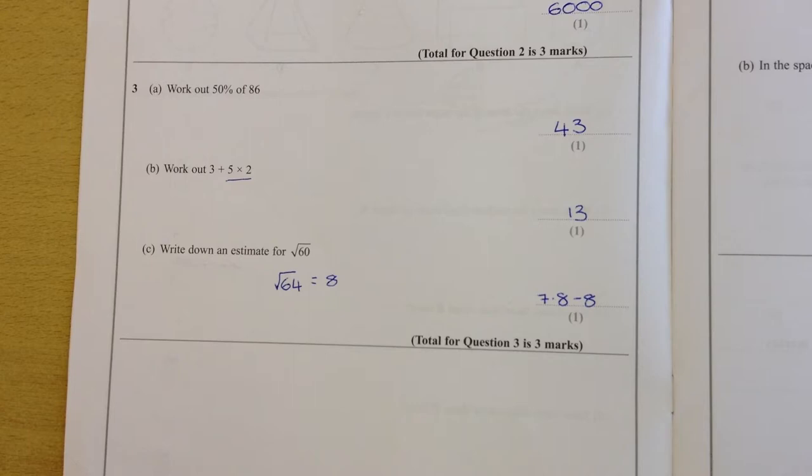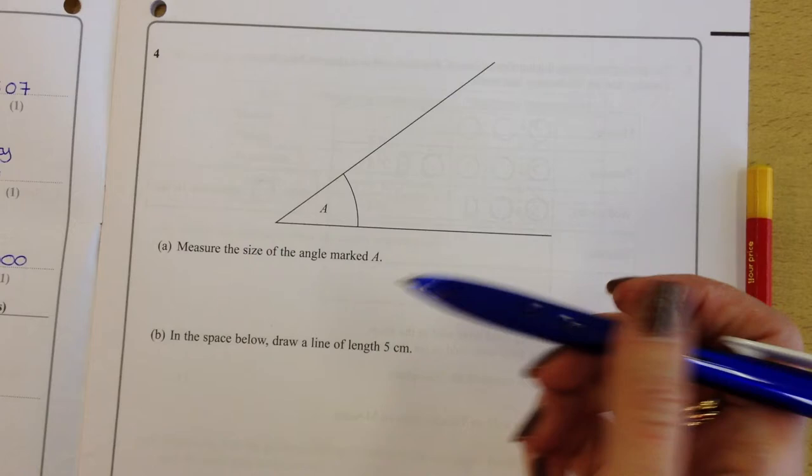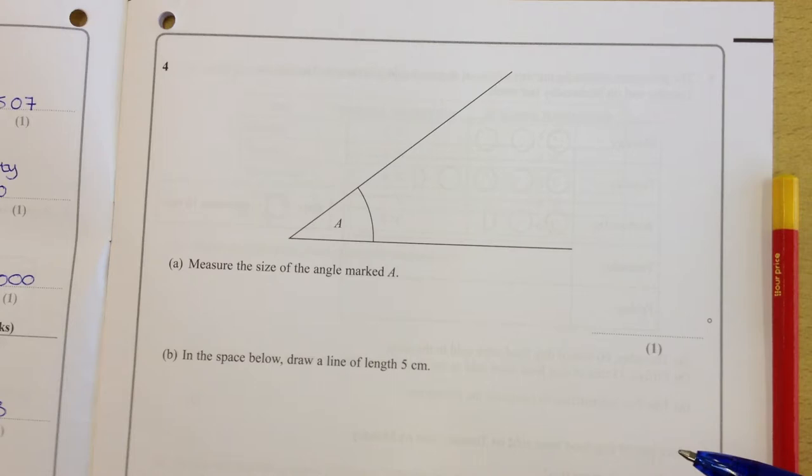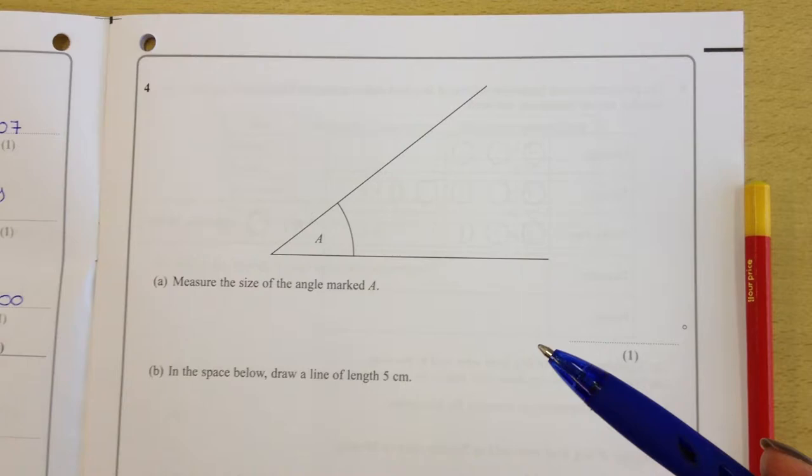On to question 4. It says, measure the size of the angle marked A. OK, so you might have been taught that it would be a good idea to estimate that angle, just to make sure that it's there or thereabouts, and you're using the right scale on the protractor. Let's have a look and see how big it is.